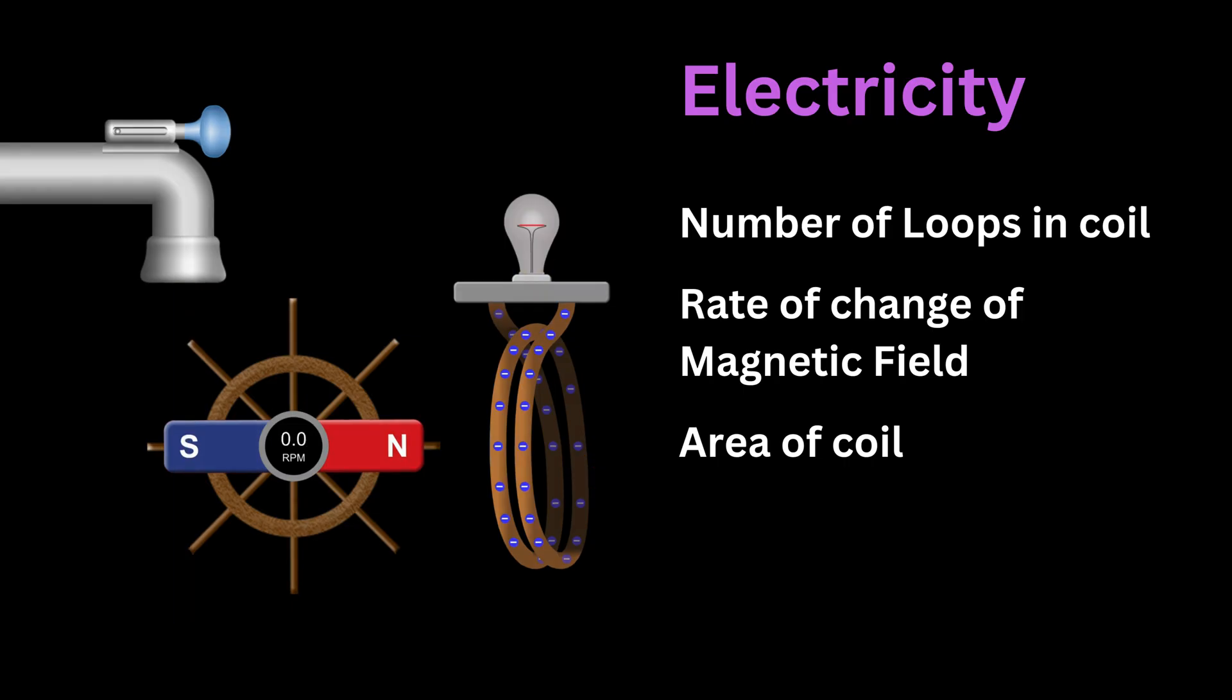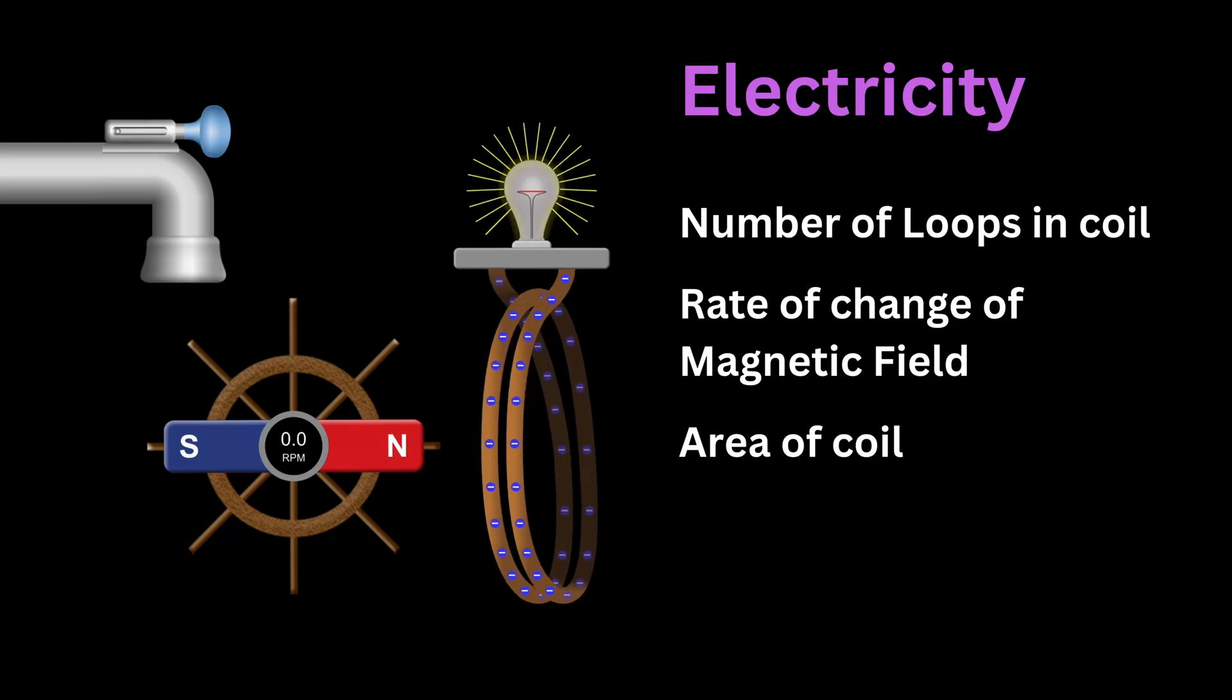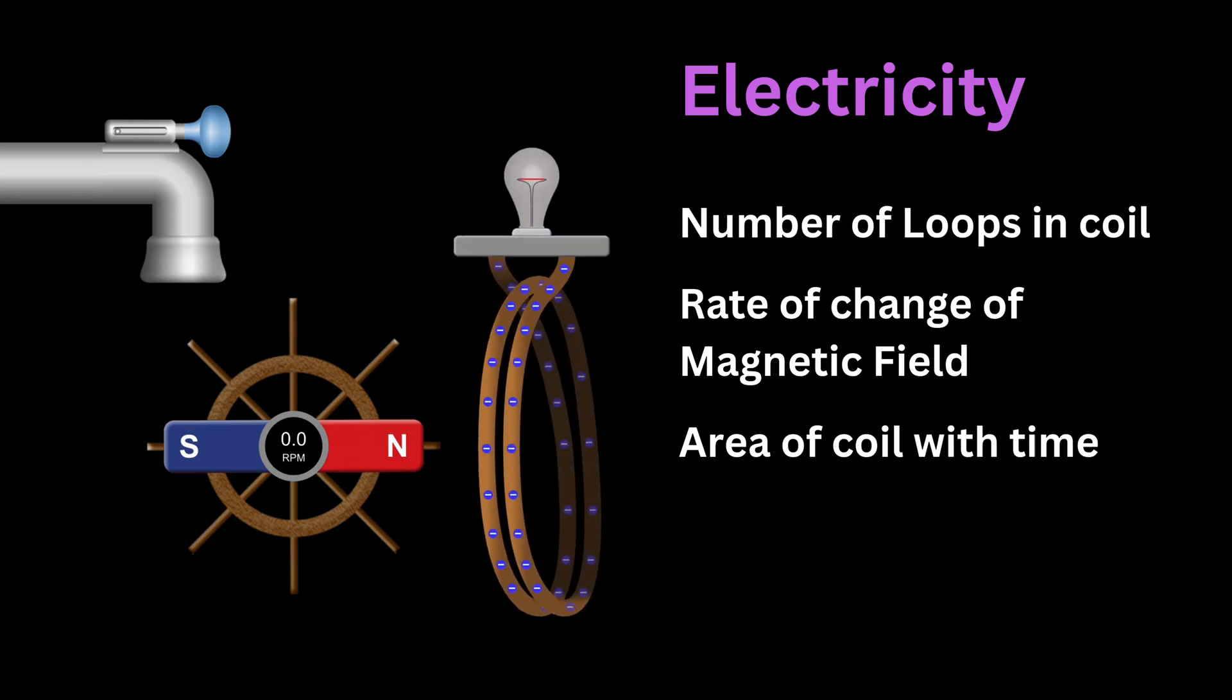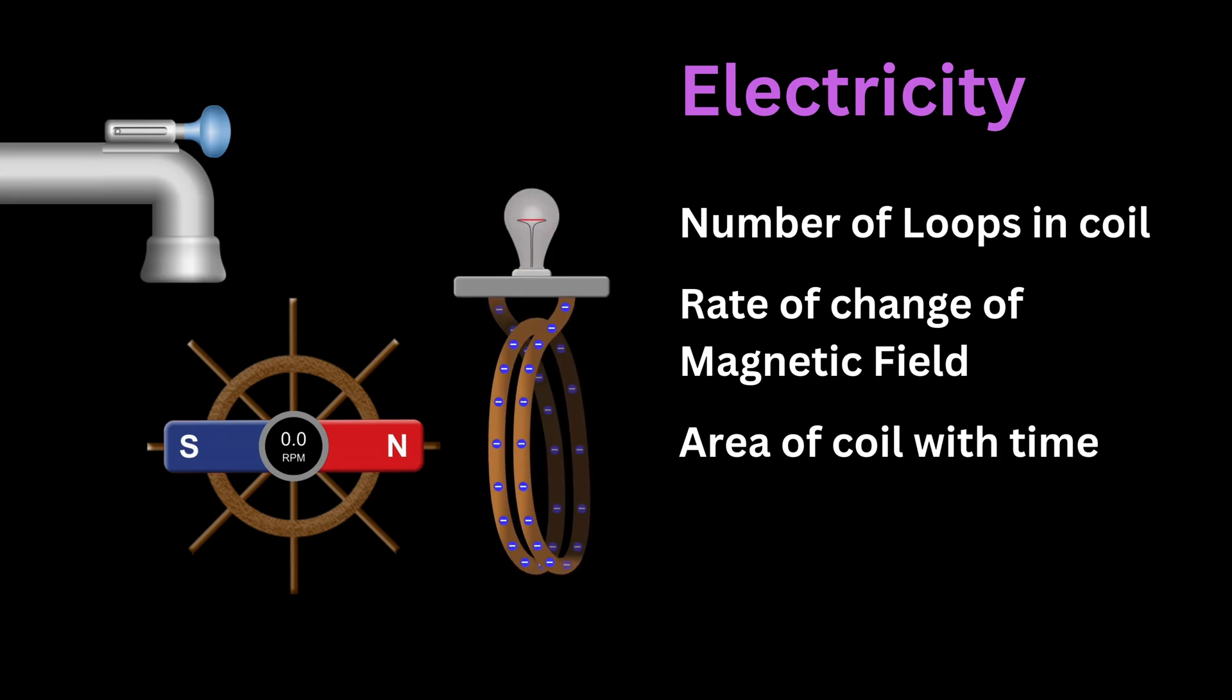Also notice that if the magnet is kept stationary, no current is induced as expected. But if I change the area of the coil with time like this, then boom, current is generated. This is exactly what Faraday figured out.